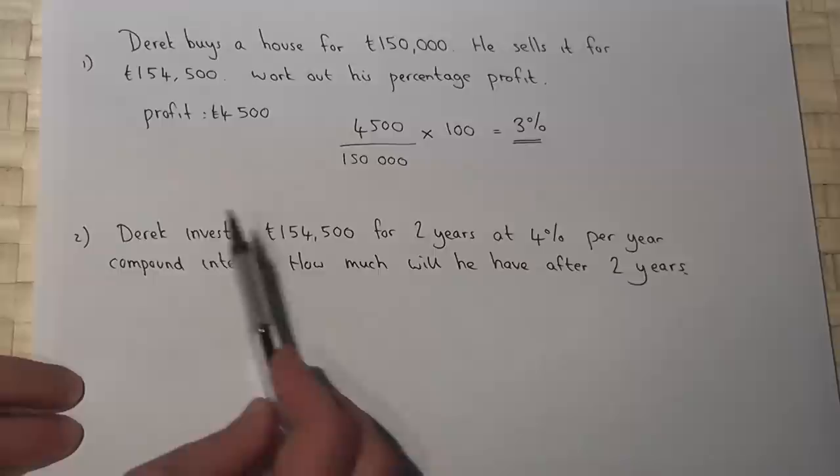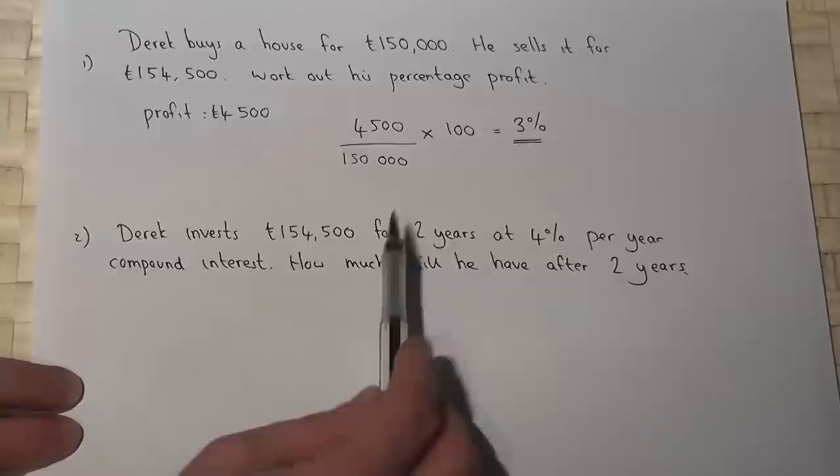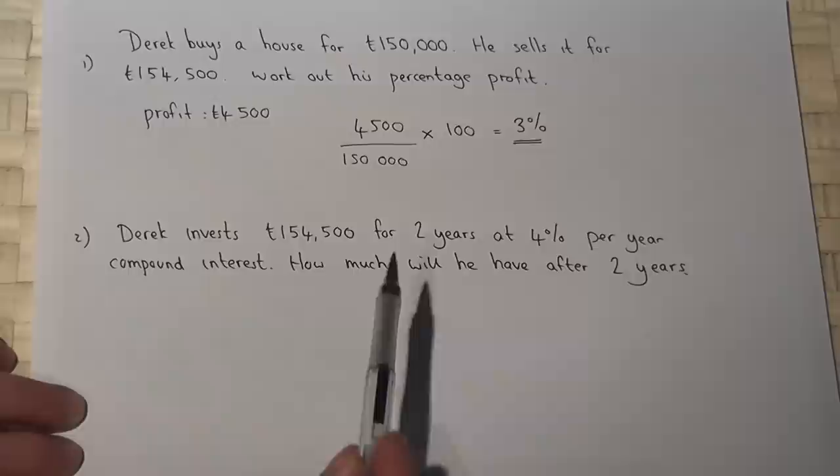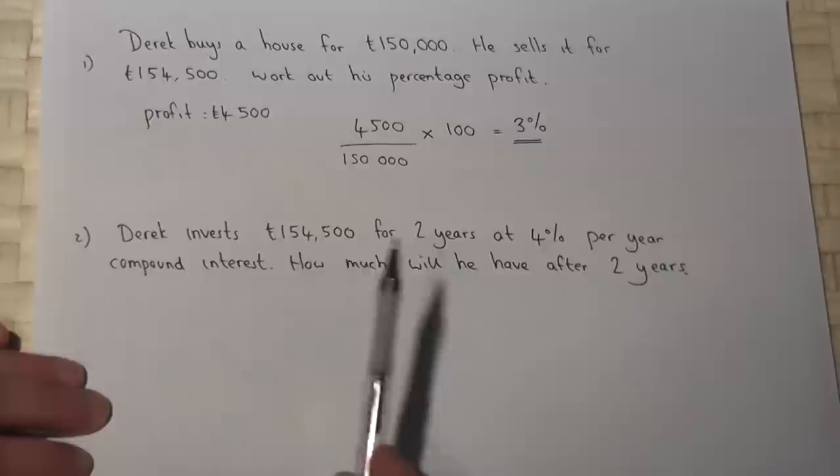Now in part two, Derek then invests this money in an account, and the account earns 4% per year. And the question asks, how much will he have after two years? Now there's a quick way to do this using a calculator, which is as follows.